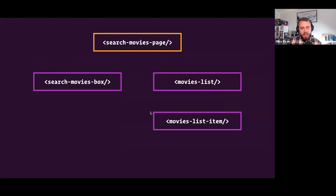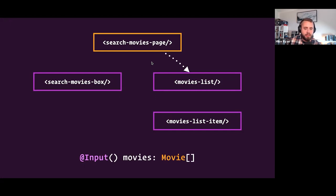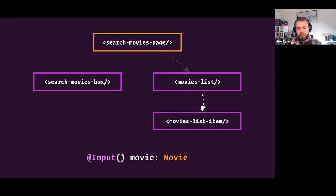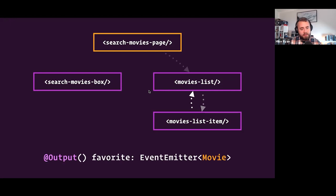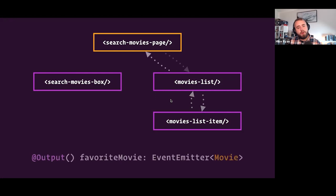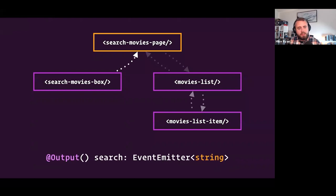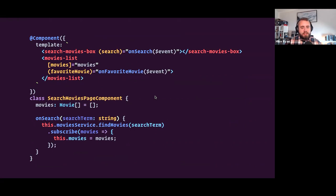The hierarchy of this simple Angular app ends up looking like this: a search movies page at the top that has all the data, passing it down via inputs to a movies list component. That movies list component uses ngFor to show a movies list item for every movie in the collection. When the user hits favorite, it emits an output letting the parent know, which bubbles back up to the search movies page to reach out to the API and mark that movie as favorited.